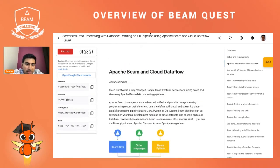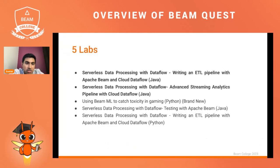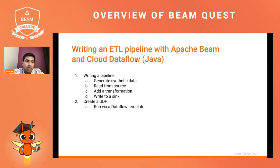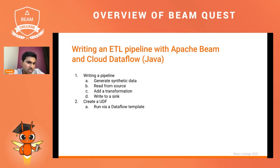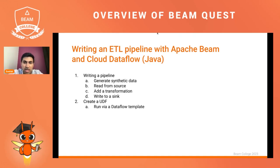Now, for what this lab actually covers: the first part is essentially writing a pipeline in Java. We're going to start with generating synthetic data, then reading from a source, adding a transformation, and then writing to a sink — essentially all the steps in an end-to-end pipeline. The second thing we'll do is create a user-defined function, and we're going to run this via a Dataflow template.